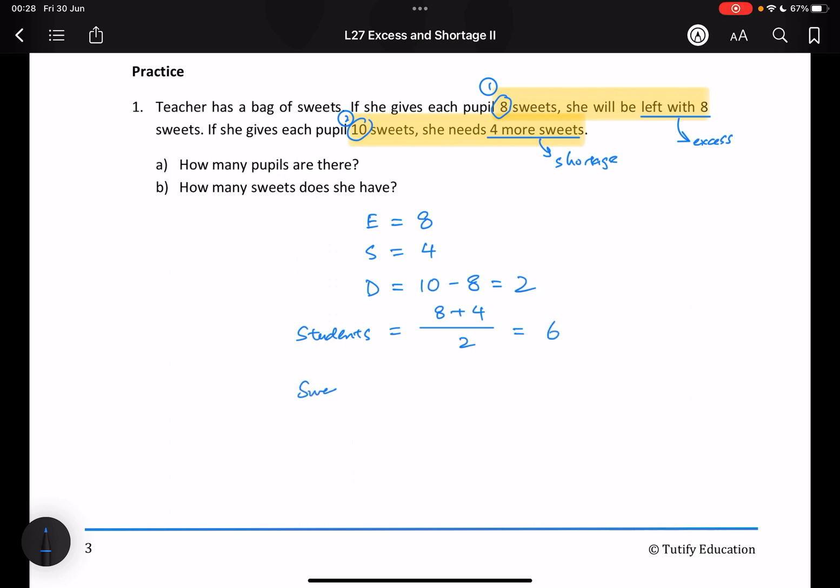If I want to find how many sweets there are, I've already done the workings just now. Same workings. This is scenario number one. You have eight extra. Scenario number two, you have shortage of four. You will still get the same answer. And there we go.